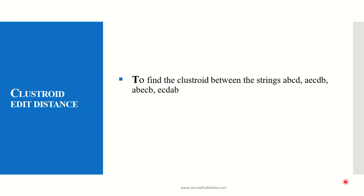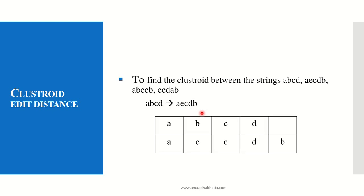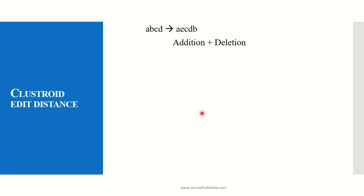To find the edit distance, there are three basic ways. The first way — finding edit distance using the matrix method — is explained in a separate video on the channel. Here we will discuss two ways to find the edit distance. The first way: if I need to convert the string ABCD to AECDB, the first method is addition plus deletion — meaning how many additions and deletions are needed to convert ABCD to AECDB.